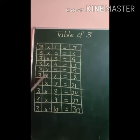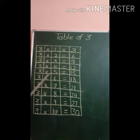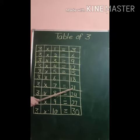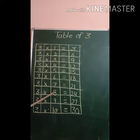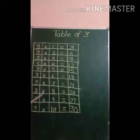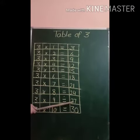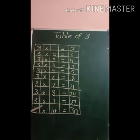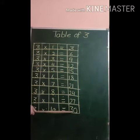3 6's are 18, 3 7's are 21, 3 8's are 24, 3 9's are 27, 3 10's are 30.